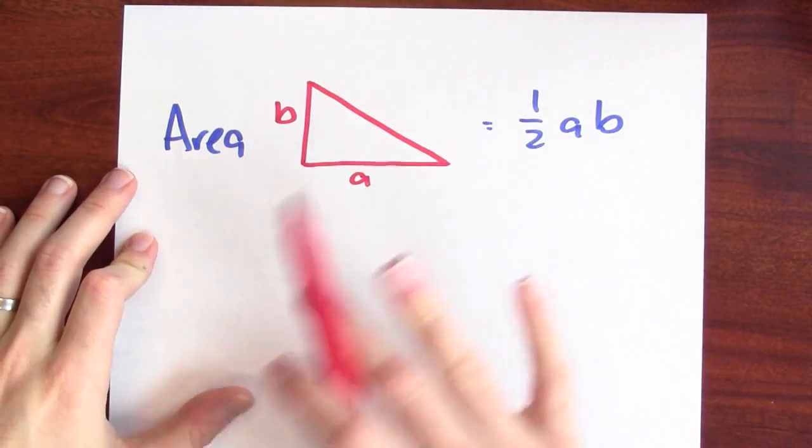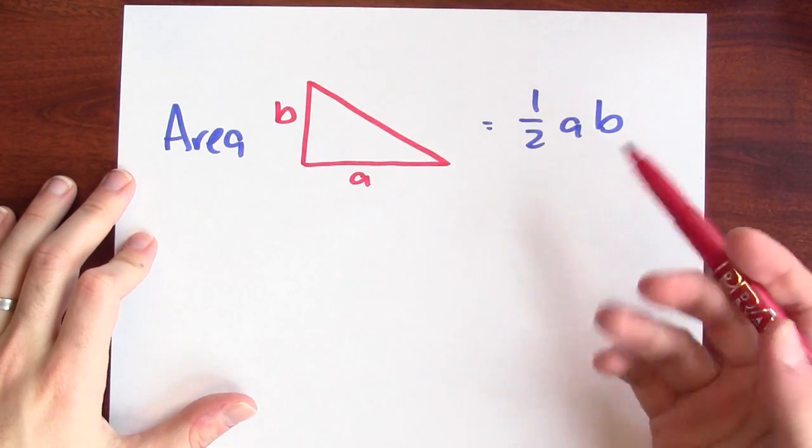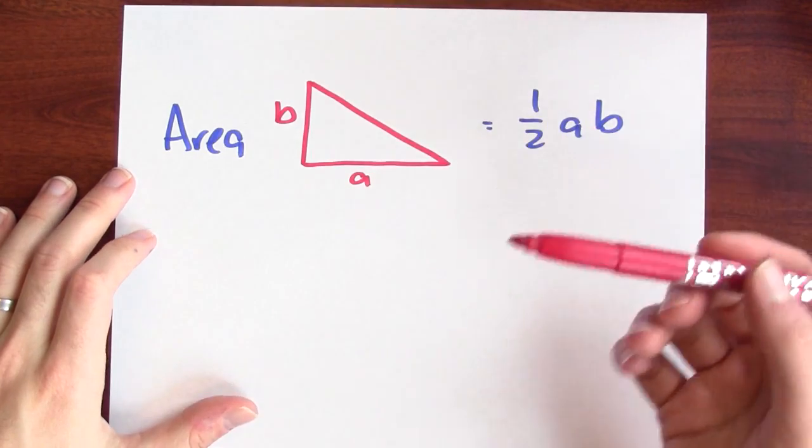But why? Why is that the area of a triangle? Well, this is really what the area of the triangle has to be in order to be consistent with the area of the whole rectangle.